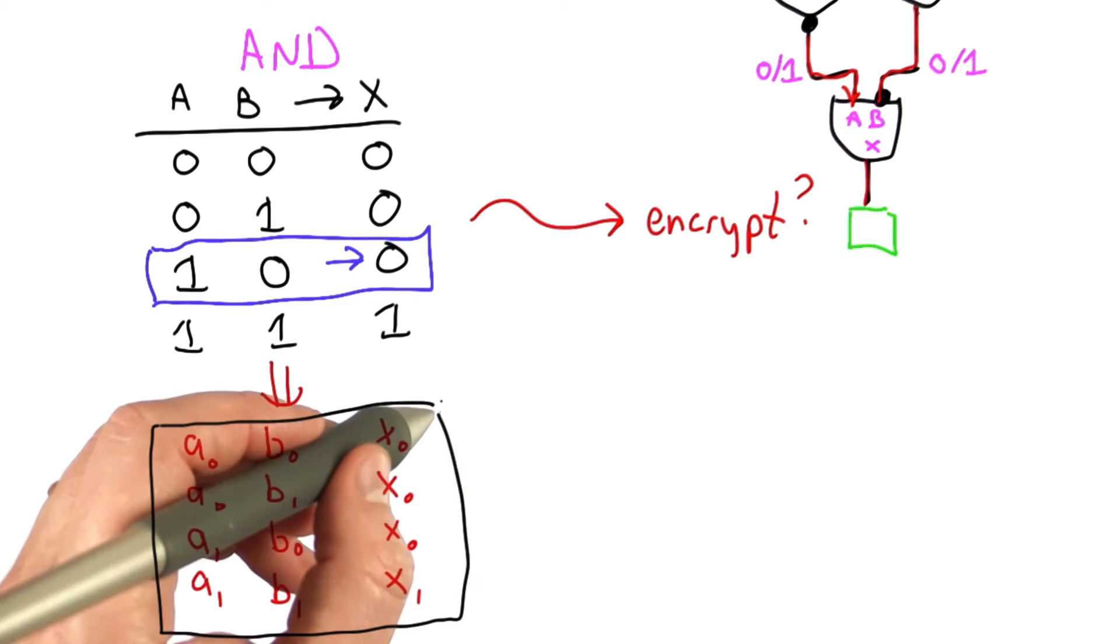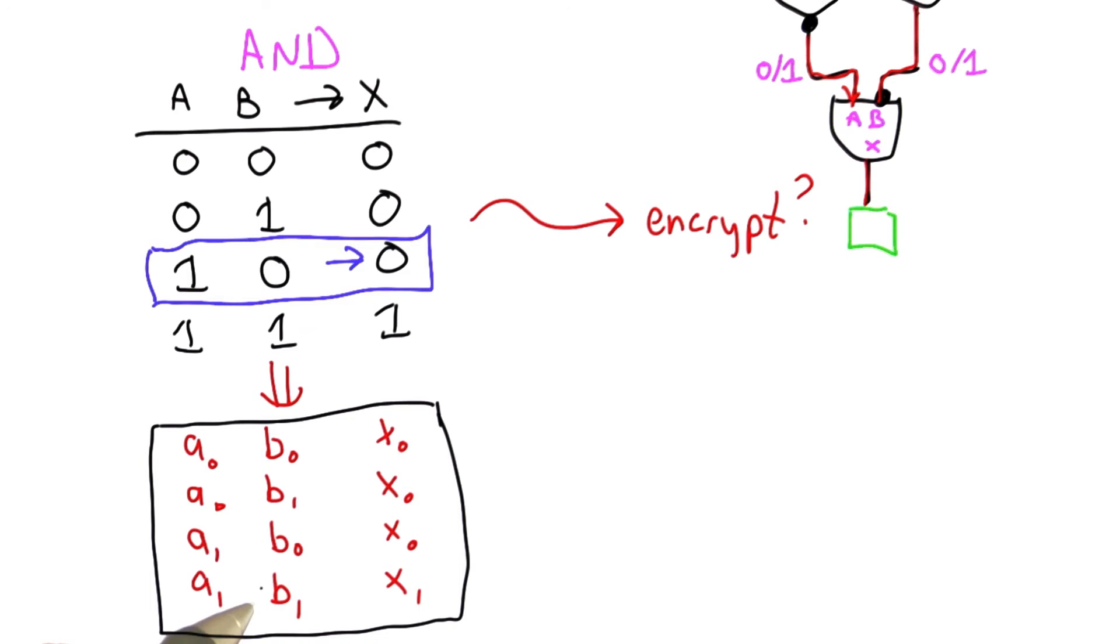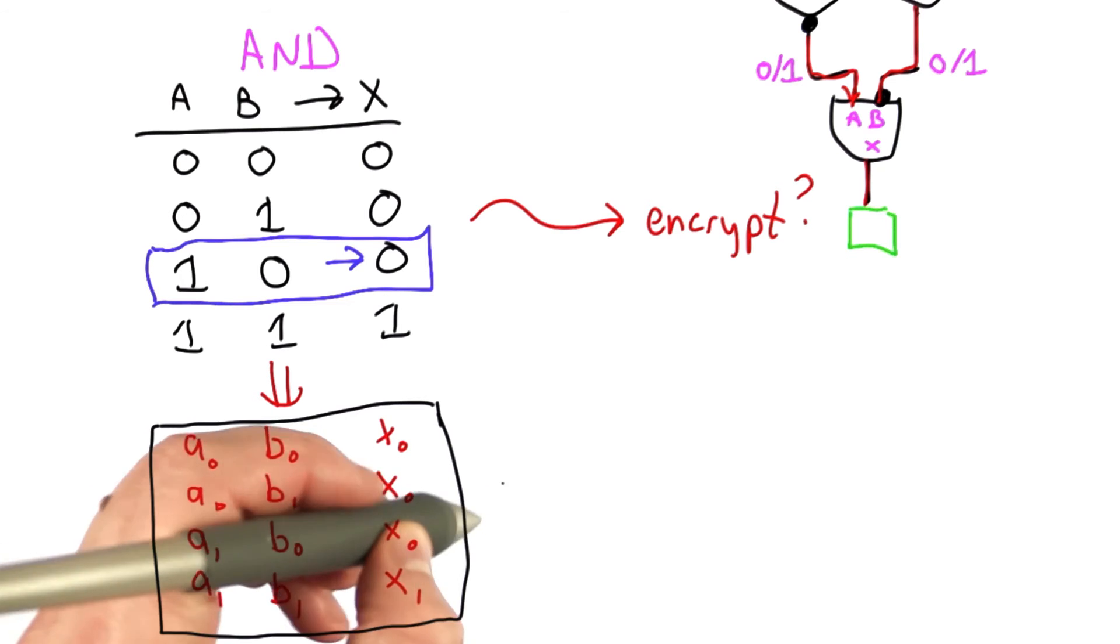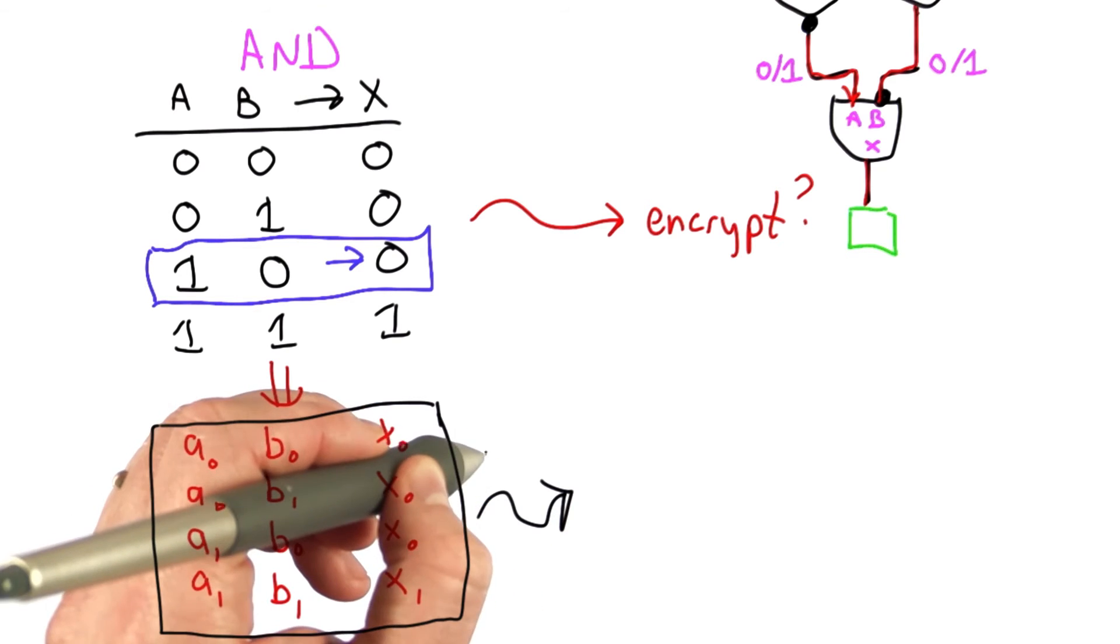So here's our new truth table. Well, if we keep things in the same order, we haven't hidden anything. So let's randomly permute it. And now suppose we get a table like this.